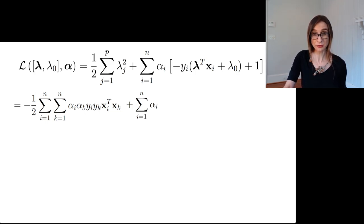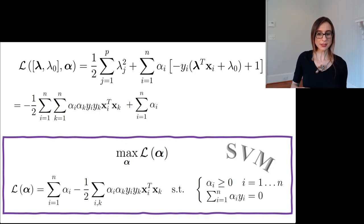This is the main SVM dual formulation. Maximize the Lagrangian with respect to alpha - the Lagrangian looks like this. The only constraints I'm keeping are that the alphas are non-negative and this is one of the conditions we derived from Lagrangian stationarity.